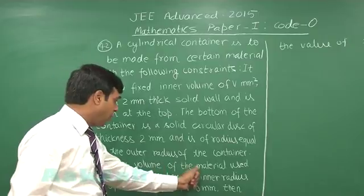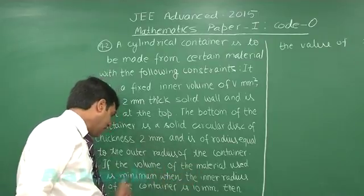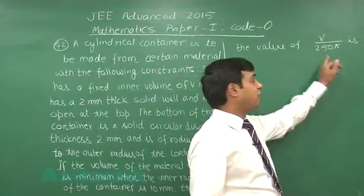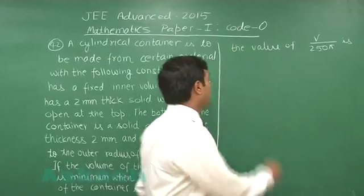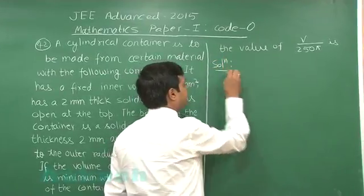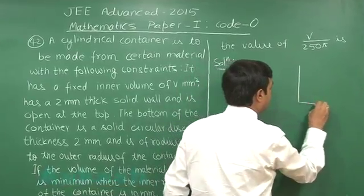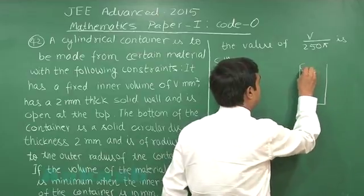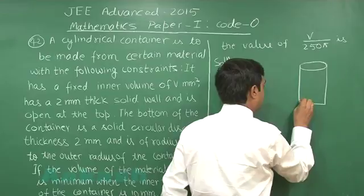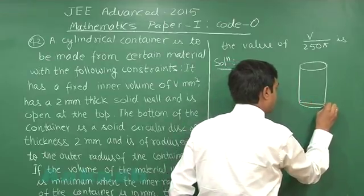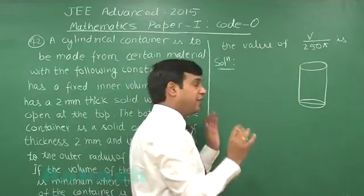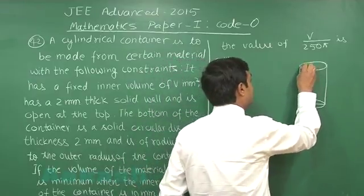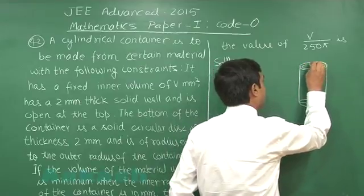If the volume of the material used is minimum when the inner radius of the container is 10 mm, then the value of V upon 250 pi is. So we can start it like this cylindrical vessel has thickness of 2 mm.